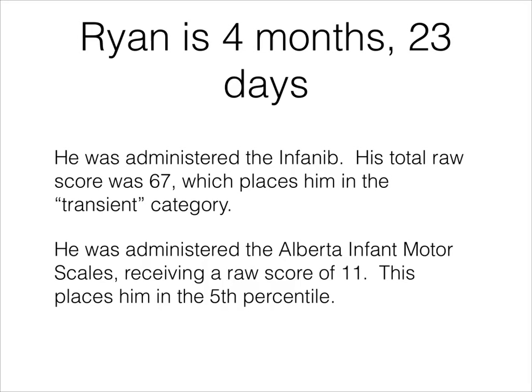We're going to start with an example. Ryan is four months and 23 days old. He was administered the criterion-referenced assessment known as the INFANIB. His total raw score was 67, which placed him in the transient category in terms of his neurological development. He was also administered the norm-referenced assessment, the Alberta Infant Motor Scales, or the AIMS. He received a raw score of 11, which placed him in the 5th percentile compared to other children his age.